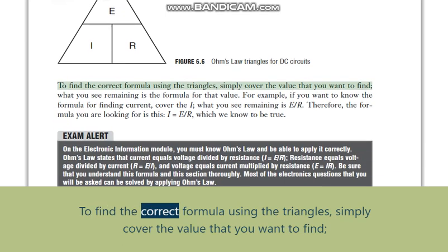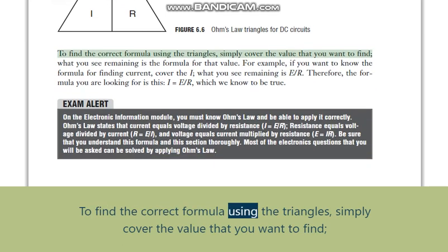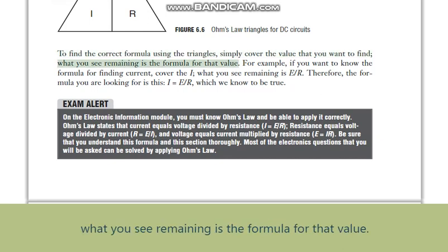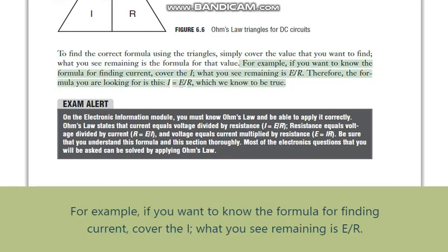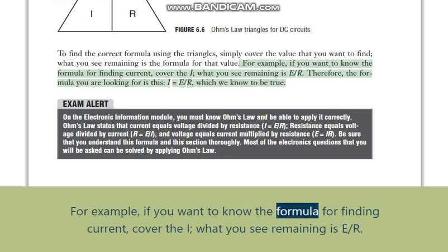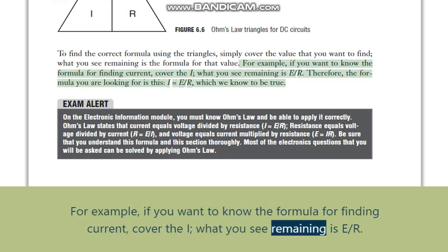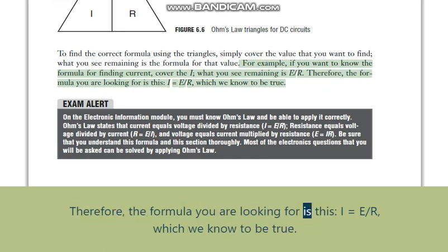To find the correct formula using the triangles, simply cover the value that you want to find. What you see remaining is the formula for that value. For example, if you want to know the formula for finding current, cover the I — what you see remaining is E slash R. Therefore, the formula you are looking for is I equals E slash R, which we know to be true.